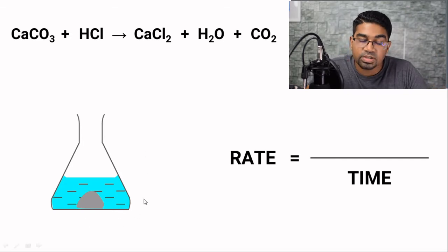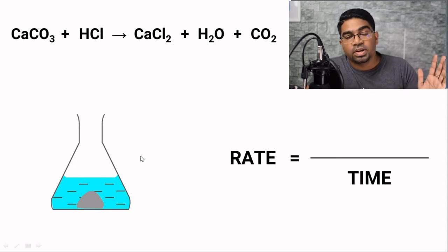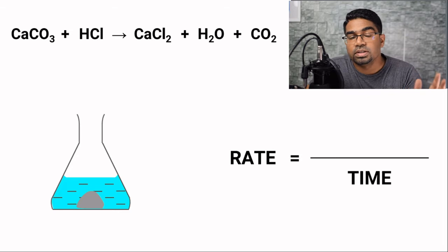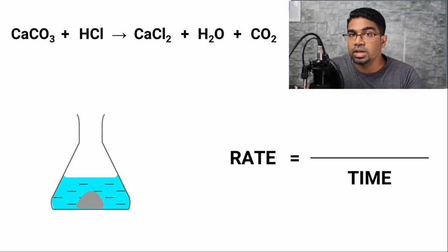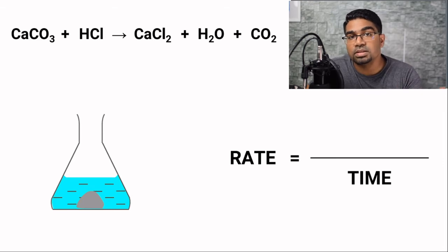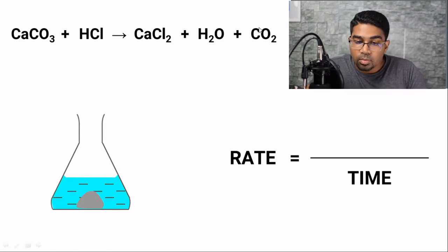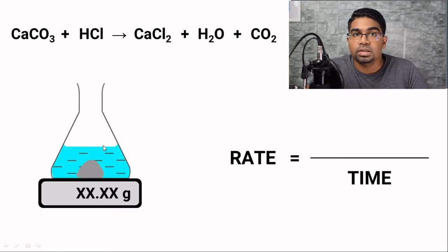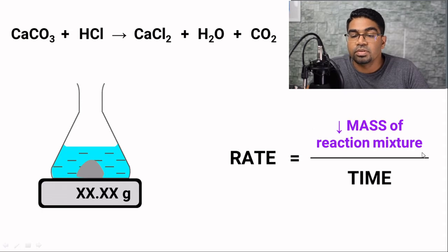When gas is being released, this reaction mixture is going to lose mass because carbon dioxide molecules are escaping into the surrounding. Therefore, the mass of the reaction mixture, the mass of this whole setup, is going to be decreasing as the reaction progresses. If the mass was decreasing very quickly, this reflects the rate of reaction because more and more carbon dioxide is being formed per unit time. One way of measuring the rate of reaction is by taking the decrease in mass of the reaction mixture per unit time.